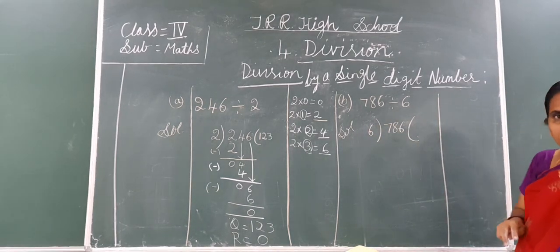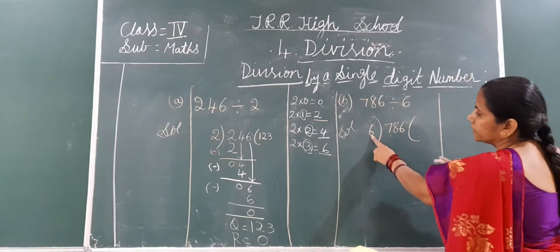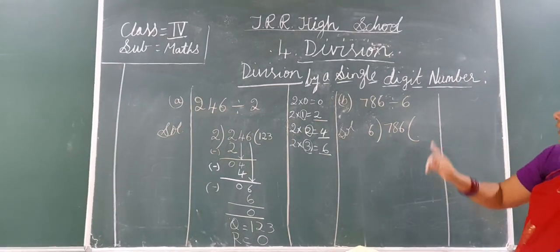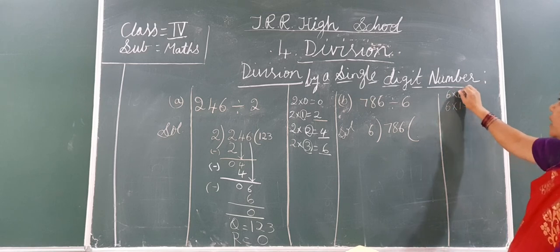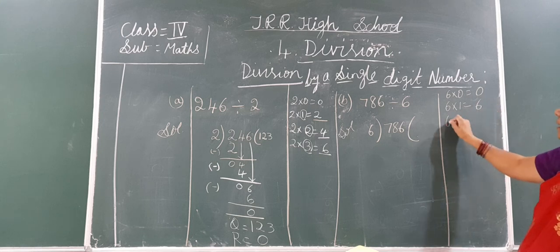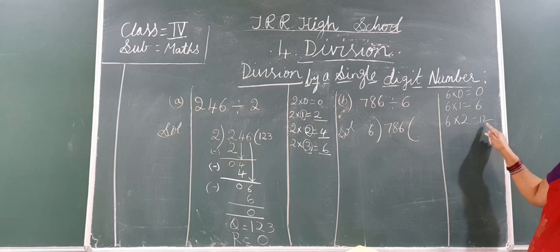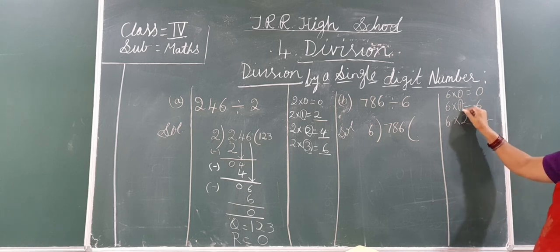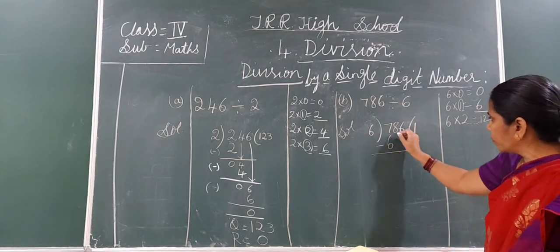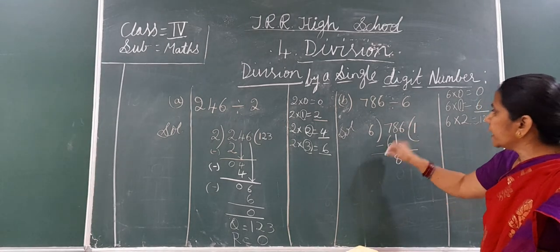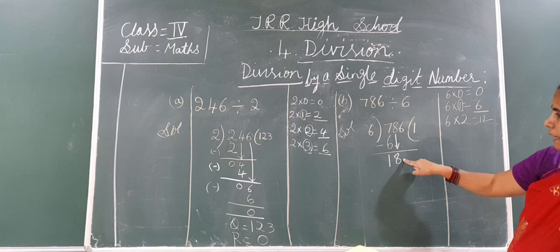Now here we will decide single digit or double digit. Here 7 is the first digit and 6 is the divisor. 7 is greater than 6, so you must take only 1 digit. Write the 6 table till you get 6 or more than 7. 6 ones are 6, 6 twos are 12 — 12 is more than 7, so don't take that greater number, go back to the previous. So 1 time. Circle 1 and write here. Underline 6 and write under 7. Subtract it. Put arrow mark and take this 8 down here. 7 minus 6 is 1.